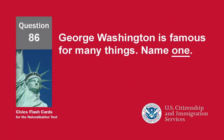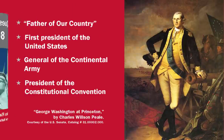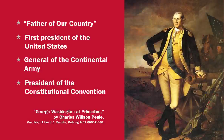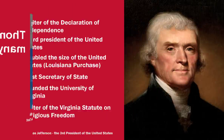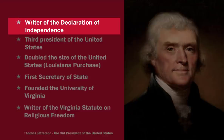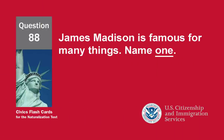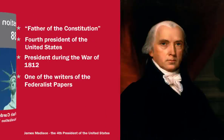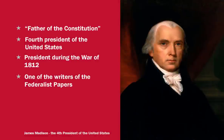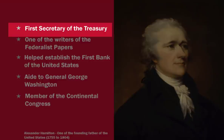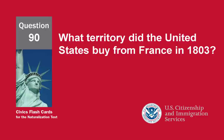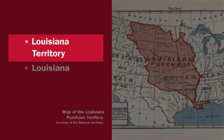George Washington is famous for many things. Name one. Father of our country. Thomas Jefferson is famous for many things. Name one. Writer of the Declaration of Independence. James Madison is famous for many things. Name one. Father of the Constitution. Alexander Hamilton is famous for many things. Name one. First Secretary of the Treasury. What territory did the United States buy from France in 1803? Louisiana Territory.